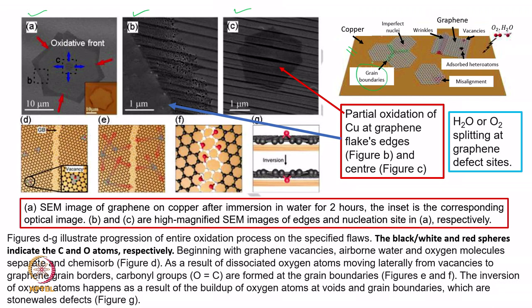Grain boundaries are shown as misaligned. Graphene is shown adsorbed, and water molecules or oxygen can be present. There are some vacancies and wrinkles as well. Any kind of discontinuity or effect brought by discontinuity will increase the corrosion rate, as shown in figure A.